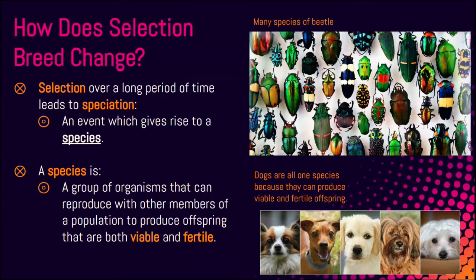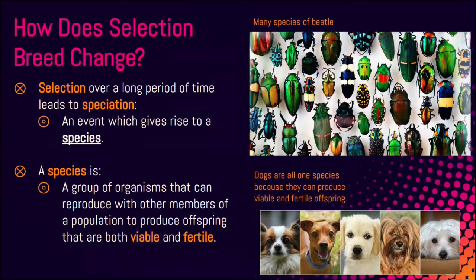We do see breeding between two different species, but they don't yield offspring that could give rise to something new. Offspring need to be viable — viable means living, able to live — meaning we have to have an offspring that is able to live a healthy life without any health complications. And fertile means that the offspring needs to be able to grow to adulthood, reproduce, and produce offspring.